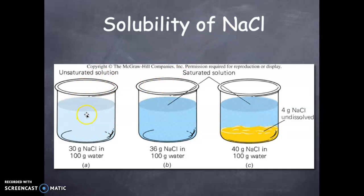We have an unsaturated solution of 30 grams of sodium chloride in water. Now we have a saturated solution of 36 grams of sodium chloride in 100 grams of water. It is saturated. If you put more than 36, only 36 will go into solution. The other 4 grams will be undissolved in the bottom of the container.